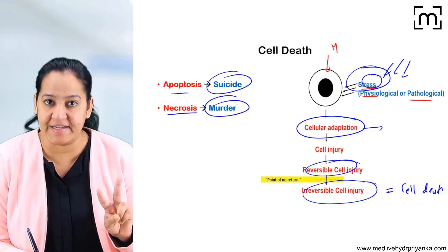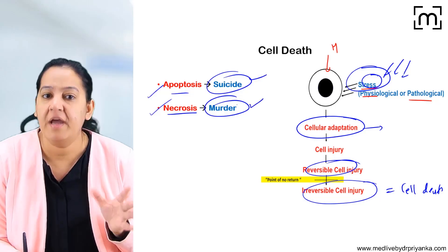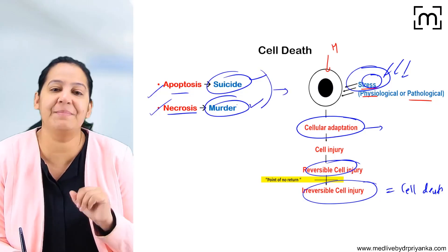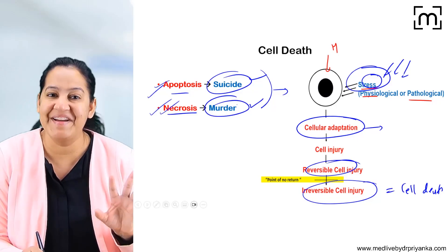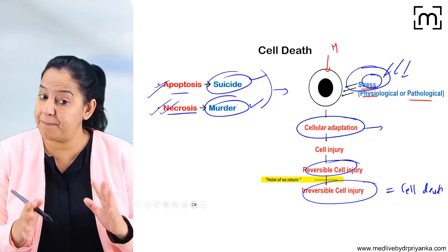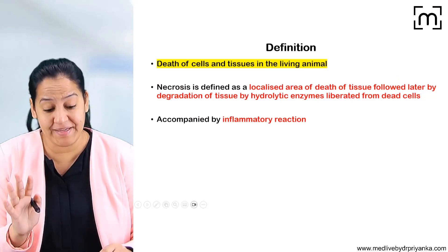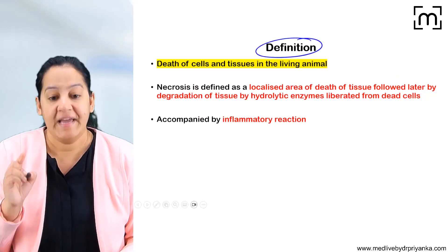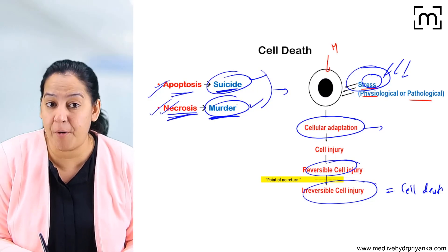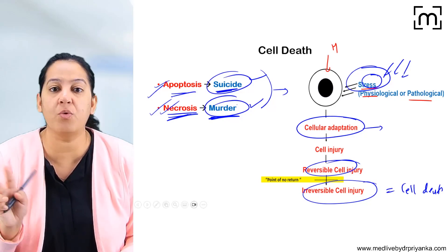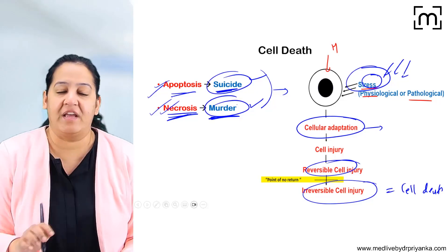Suicide is compared with apoptosis and murder is compared with necrosis. So basically there are two mechanisms by which the cell can die — apoptosis or necrosis. Whenever a person commits suicide or whenever a person is murdered, in both scenarios the person will die but the mechanism is different. In the same way, in apoptosis and necrosis both the cell will die, but the mechanism will be different. I'll explain why I compare apoptosis with suicide and necrosis with murder.